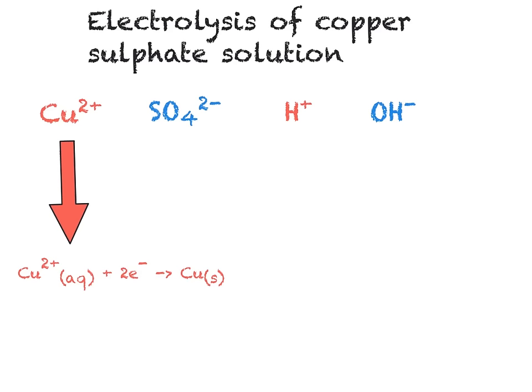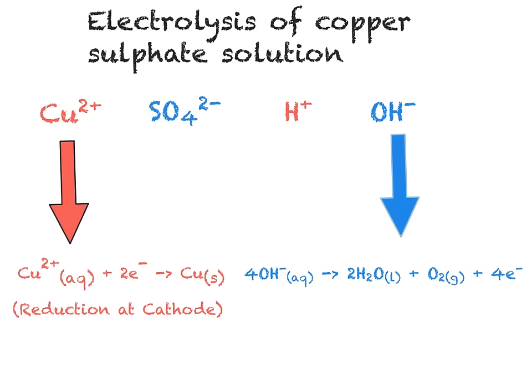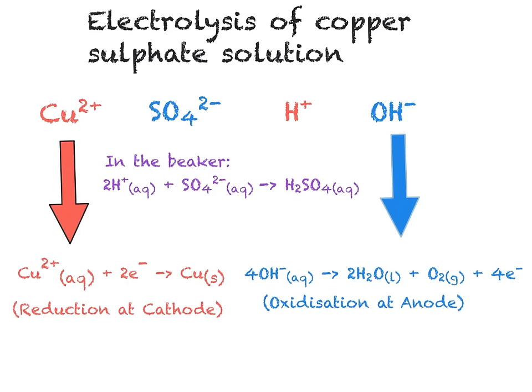Meanwhile, at the anode, the OH⁻ is a simpler anion than the SO₄²⁻, meaning that it will be preferentially evolved. The half equation for this is: 4OH⁻ → 2H₂O + O₂ + 4e⁻. It is the O₂, the oxygen gas, that will be released. This leaves our hydrogen and sulfate still in solution, meaning that we will have formed H₂SO₄, better known as sulfuric acid.